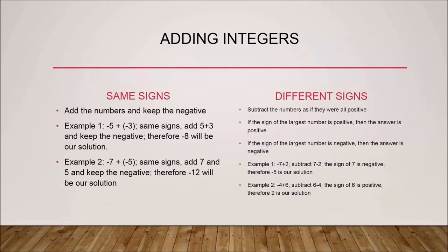Example two: same thing as example one. Negative seven plus negative five — those two numbers have the same signs, so we add seven and five, which is twelve, and put the negative sign, giving a final answer of negative twelve. In the case of different signs, we need to be a little more careful.